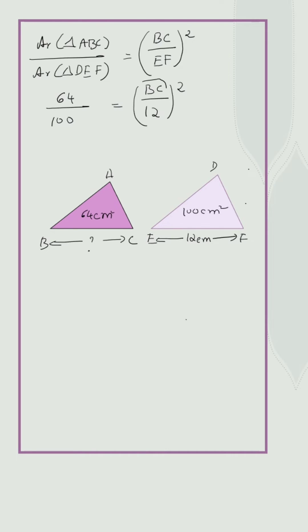We have to find the value of BC. So now let us take the square root on both sides. That is equal to square root of 64 upon 100 is equal to BC upon 12. That is equal to 8 by 10 is equal to BC upon 12.